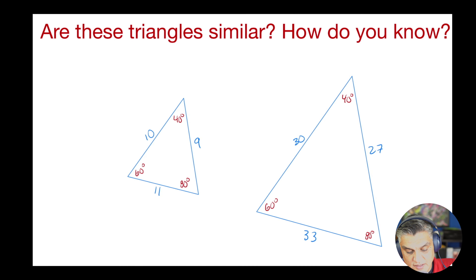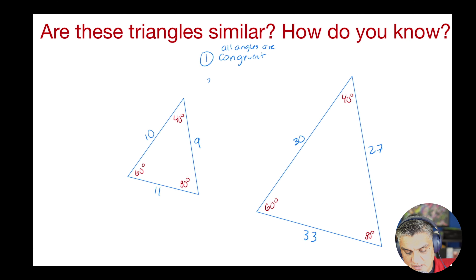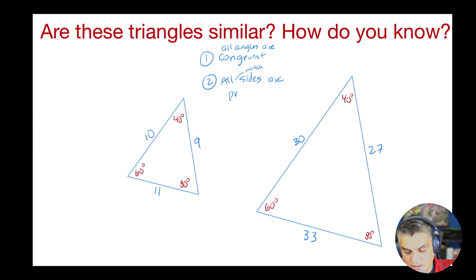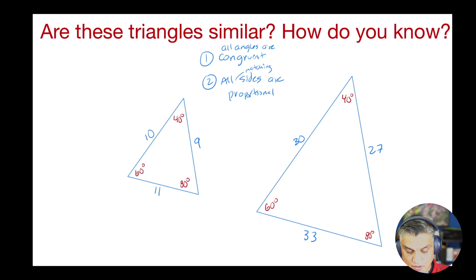So the two things I need are: one, all angles are congruent; and two, all matching sides are proportional — meaning I have the same ratio. So let's check that. All angles are congruent — let's look at that first.